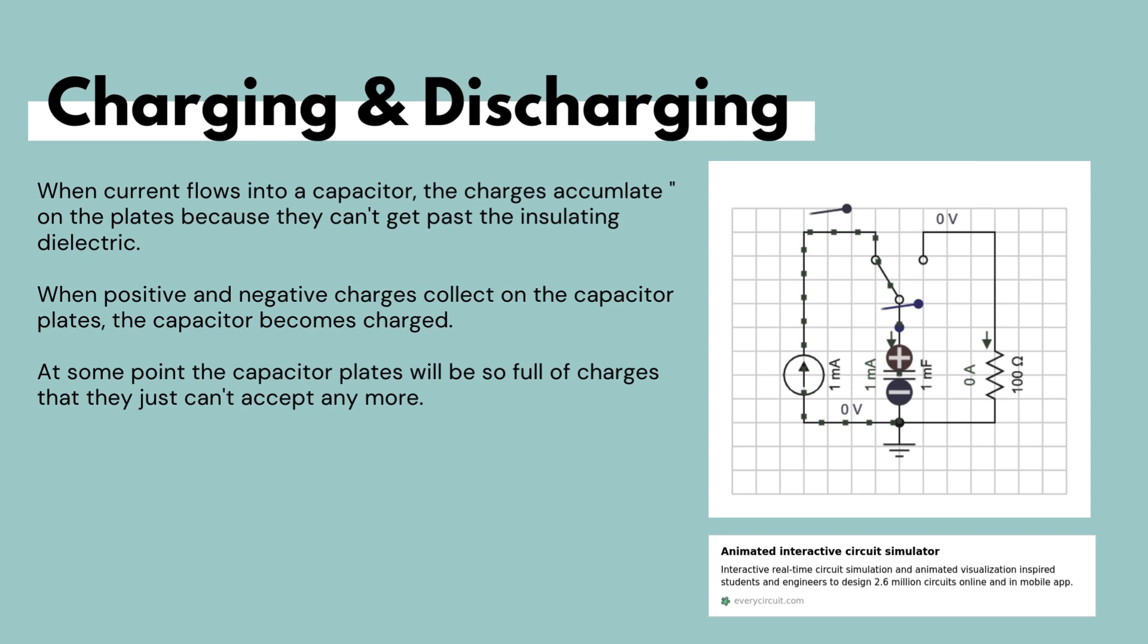When the positive and negative charges accumulate on either side of the capacitor plates, they become charged. So the capacitor becomes charged. And this is where the capacitance comes in, because this is where the capacitance tells you the maximum amount of charge that the capacitor can store.